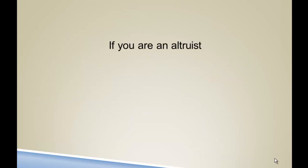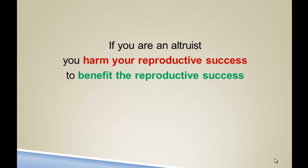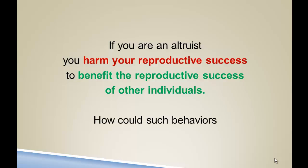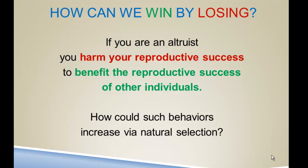Let's begin with the problem of altruism. The problem is that if you are an altruist, you harm your own reproductive success in order to benefit the reproductive success of other individuals. How can such behaviors ever be selected for? How would that ever evolve? How can we win by losing? This is the problem of altruism we've been wrestling with all semester.